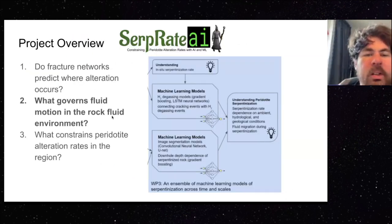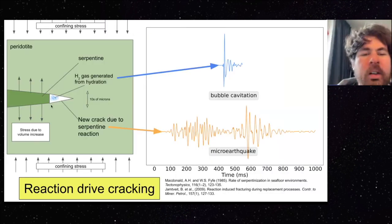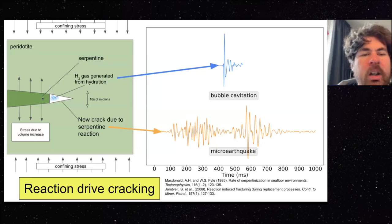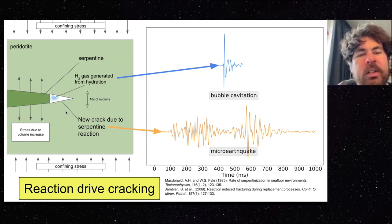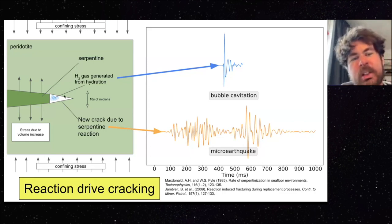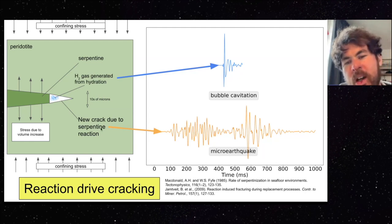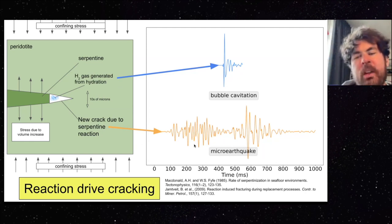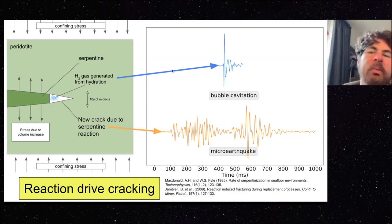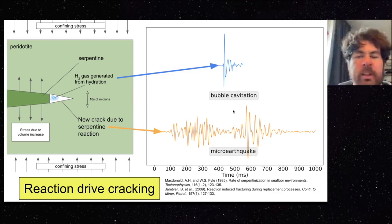Next we'll talk about fluid motion in the rock-fluid environment. The idea behind a reaction-driven cracking system is that there should be some fluid in some kind of pore space interacting with unaltered rock. That rock alters and happens to expand in volume when it does, creating stress which promotes the crack to grow. This alteration will probably produce hydrogen and also produce a micro-earthquake. The idea is that we should hear micro-earthquakes and, if there's gas moving in the system, we should hear bubbles as they move around. In order to do this, both a geophone and hydrophone network were deployed — this is a hundred meters across.